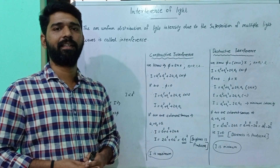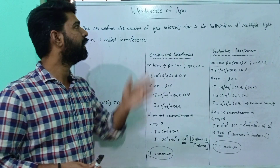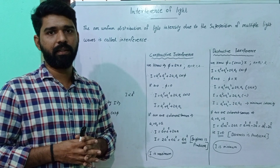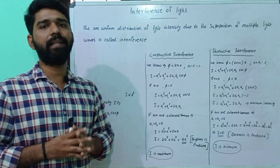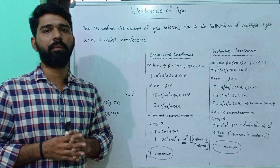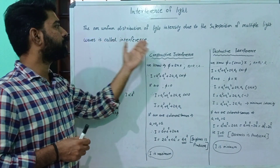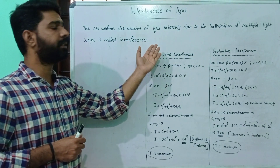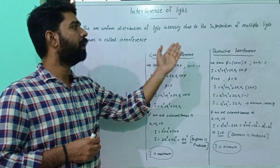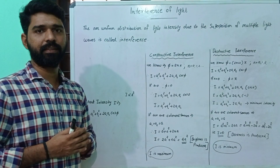Hi! We are going to discuss the interference of light. First of all, what is the interference of light? The non-uniform distribution of light intensity due to the superposition of multiple light waves is called interference.